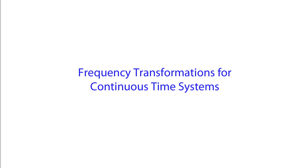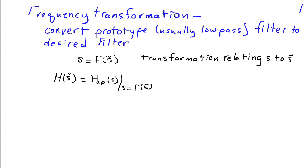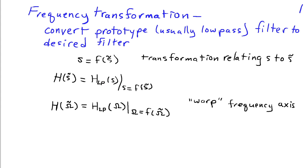Frequency transformations can be developed for either discrete time or continuous time systems. In this lecture, we're going to look at frequency transformations for continuous time systems. Frequency transformations are used to convert a prototype filter, usually low pass, to a desired band pass, high pass, or band stop filter. These transformations involve replacing s in the prototype low pass filter transfer function with some function of a new variable s tilde, so that h of s tilde equals h low pass of s with s replaced by f of s tilde. This corresponds to warping the frequency axis using the function omega equals f of omega tilde, converting from one frequency axis to another to obtain the desired transformation of the low pass frequency response.